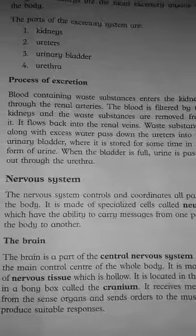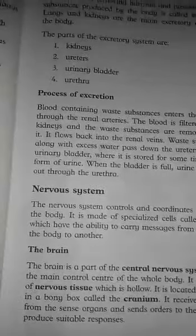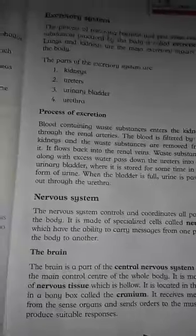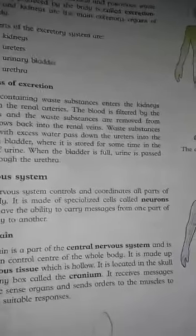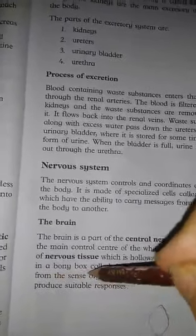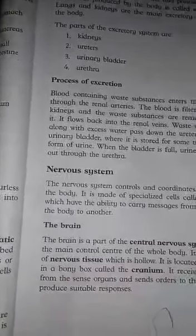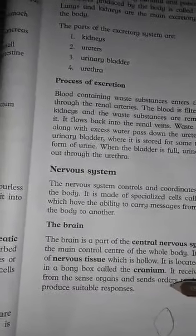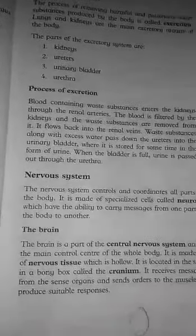The brain is located in the skull, in a bony box called the cranium. It receives messages from the sense organs and sends orders to the muscles to produce suitable responses.